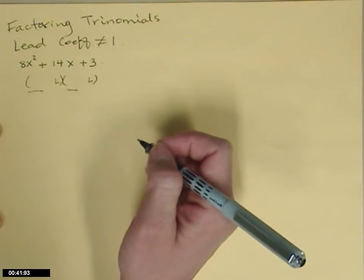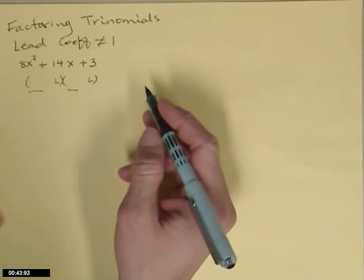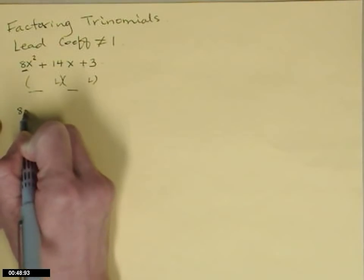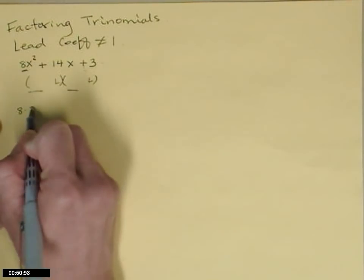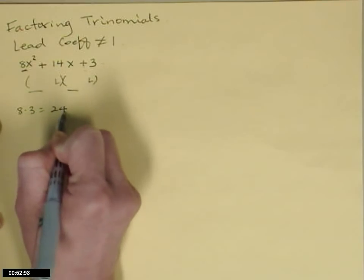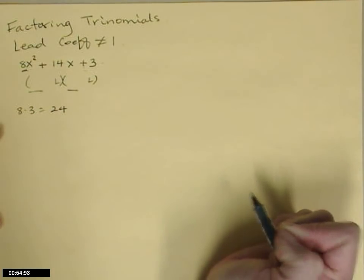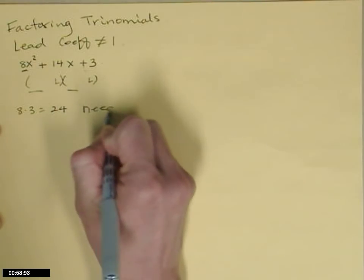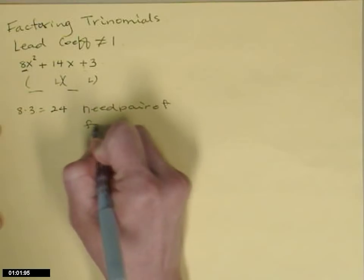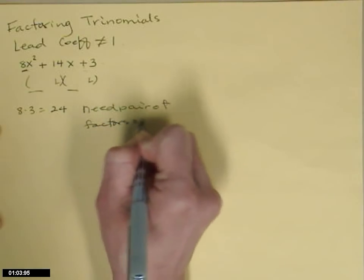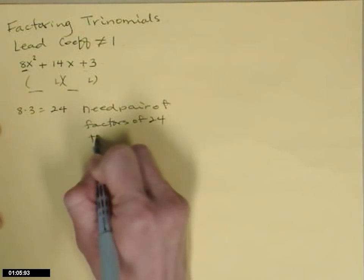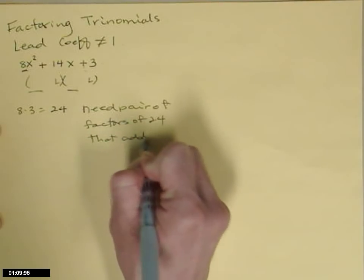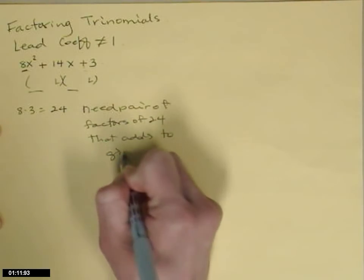We could go through this by guessing and checking, but there's a better way. We're going to take that leading coefficient, 8, and multiply it by the constant term, 3. That gets us to 24. Now we need a pair of factors of 24 that, since the 3 is positive, adds to give 14.